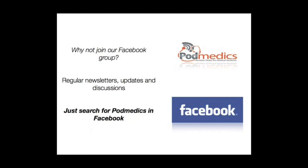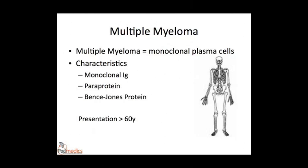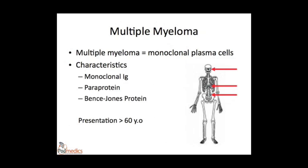Moving on to multiple myeloma, which is a haematological malignancy of plasma cells. The important features are the production of monoclonal immunoglobulin, termed paraprotein or IgG M protein, a reduction in normal polyclonal immunoglobulins with important consequences, and often, but not always, production of free light chains by abnormal plasma cells, resulting in Bence-Jones protein in the urine. The most important sites that abnormal plasma cells seed are the bone marrow, vertebrae, ribs, and skull.